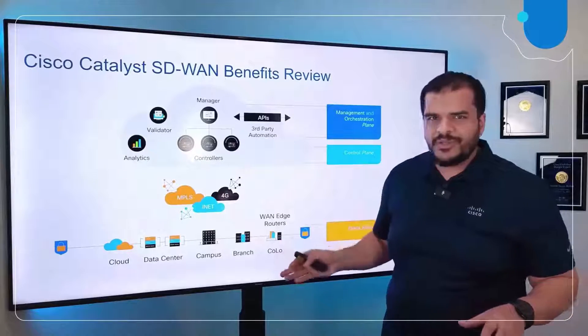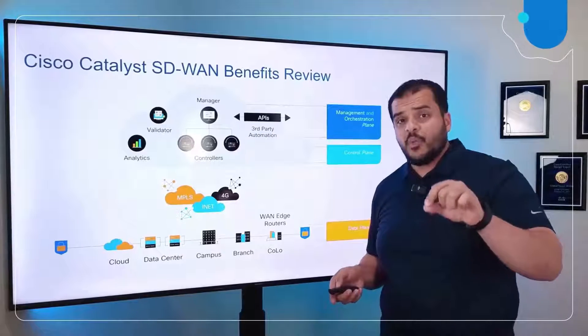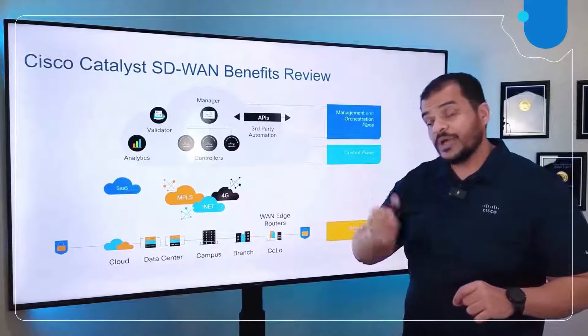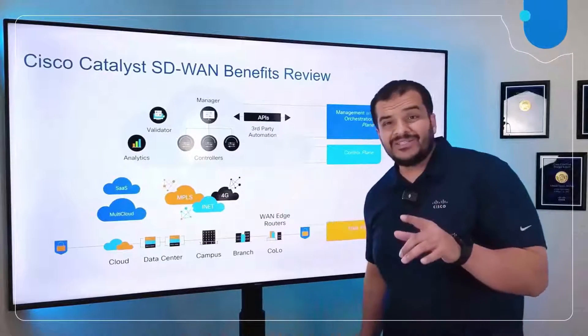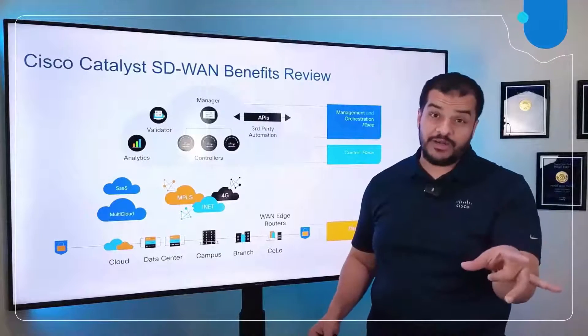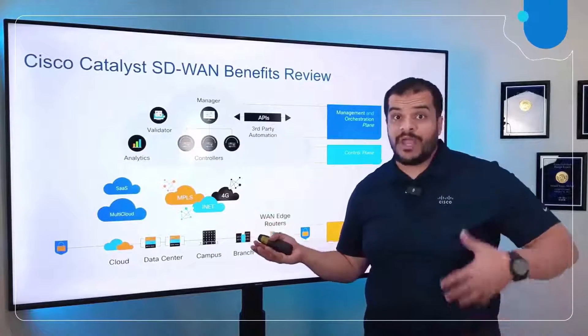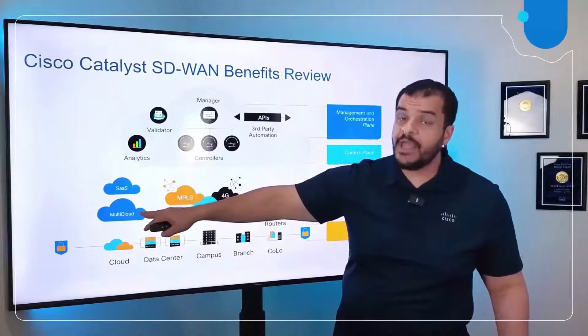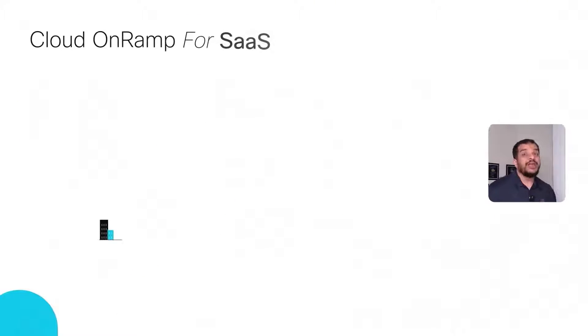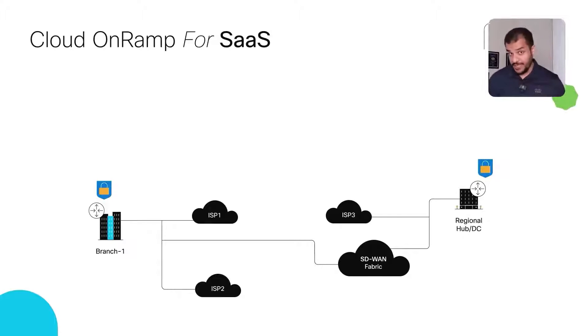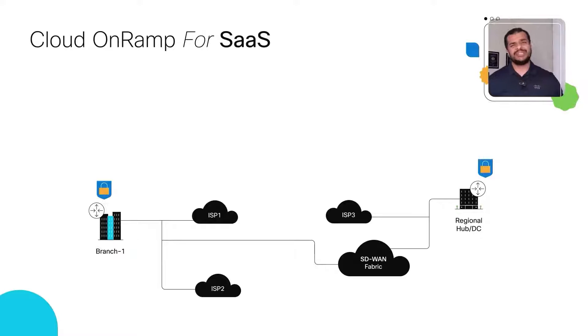There is a very crucial benefit that will get you to choose Cisco Catalyst SD-WAN: Cloud-on-Ramp for SaaS and Cloud-on-Ramp for multi-cloud. Cloud-on-Ramp for SaaS connects you to your favorite cloud SaaS applications in the fastest possible way. From the Manager — the single pane of glass — with very minimal configuration, you're connected to your SaaS application. But it's not just about easy connectivity; it also guarantees the quality of that connectivity.